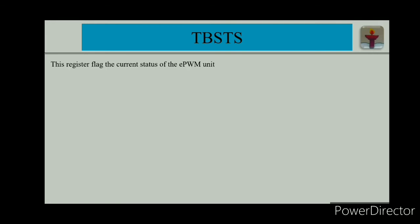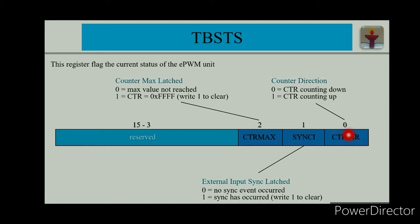The time-based status register flags the current status of the EPWM unit. The counter direction bit indicates whether the counter is counting up (bit = 1) or counting down (bit = 0). The synchronous input bit will be 1 if a synchronous input event has been seen by the EPWM unit, and 0 otherwise. To clear this bit, you must write a 1 into it.